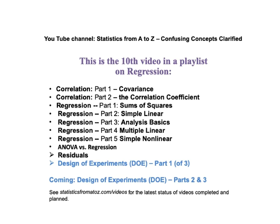That concludes our video on DOE Part 1. You may feel a little confusion at this point, and that's understandable given that this is only Part 1 of a three-part series. Please stick with it — the explanations and examples in the next two videos should help a lot. Coming next will be two more videos on DOE. There are also videos on the other statistical concepts mentioned in this video: correlation, covariance, regression, ANOVA, and residuals, available on the YouTube channel Statistics from A to Z, Confusing Concepts Clarified. See StatisticsFromAtoZ.com/videos for the latest status of completed and planned videos.